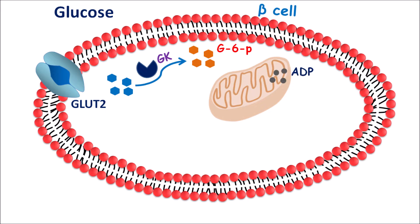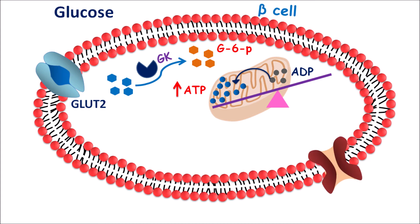Within the mitochondria, ADP is converted into ATP molecules. When glucose levels are excessively increased in the blood, more glucose enters the beta cells, resulting in more production of ATP molecules, which results in an increased ATP to ADP ratio. When ATP levels are excessively increased, they target ATP-sensitive potassium channels. These ATP-sensitive potassium channels have an ATP binding site, and ATP can bind to them.